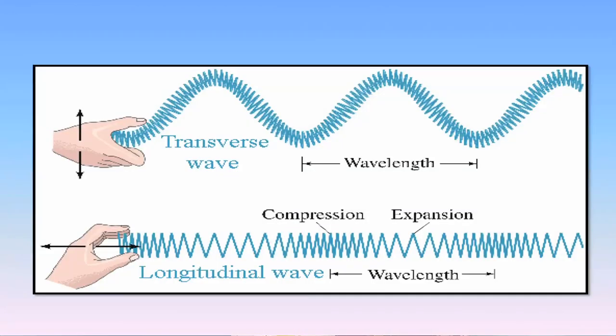Mechanical waves can be either transverse or longitudinal, while electromagnetic waves are only transverse. A transverse wave is one in which the motion of the wave and of the particle are perpendicular to each other. In a longitudinal wave, the motions are in the same direction. Sound waves can be of two types — both transverse as well as longitudinal.